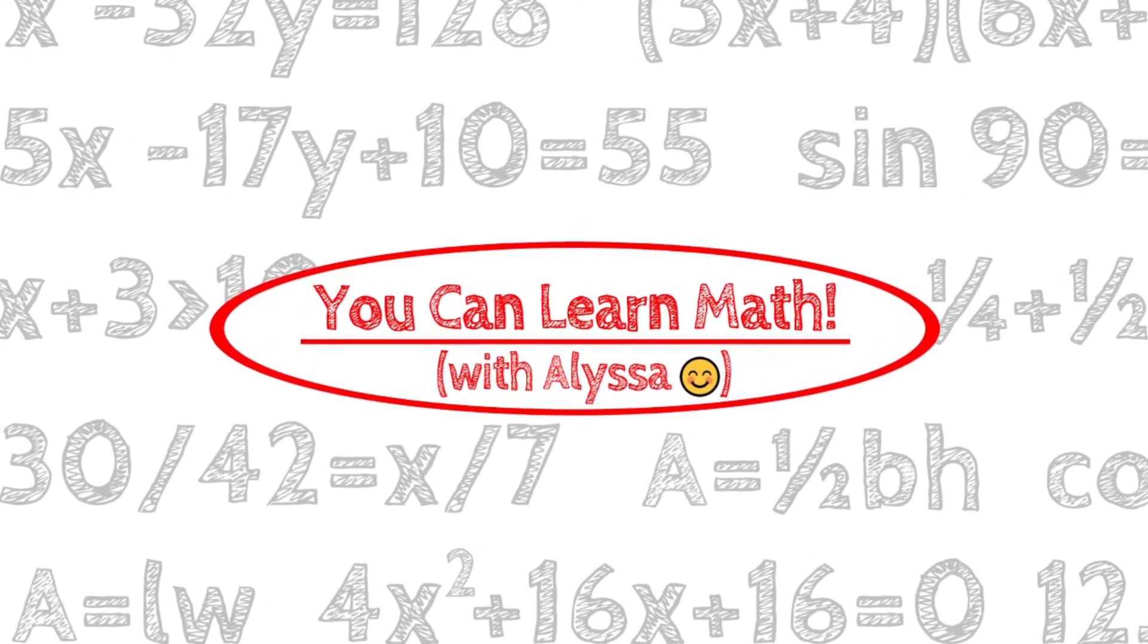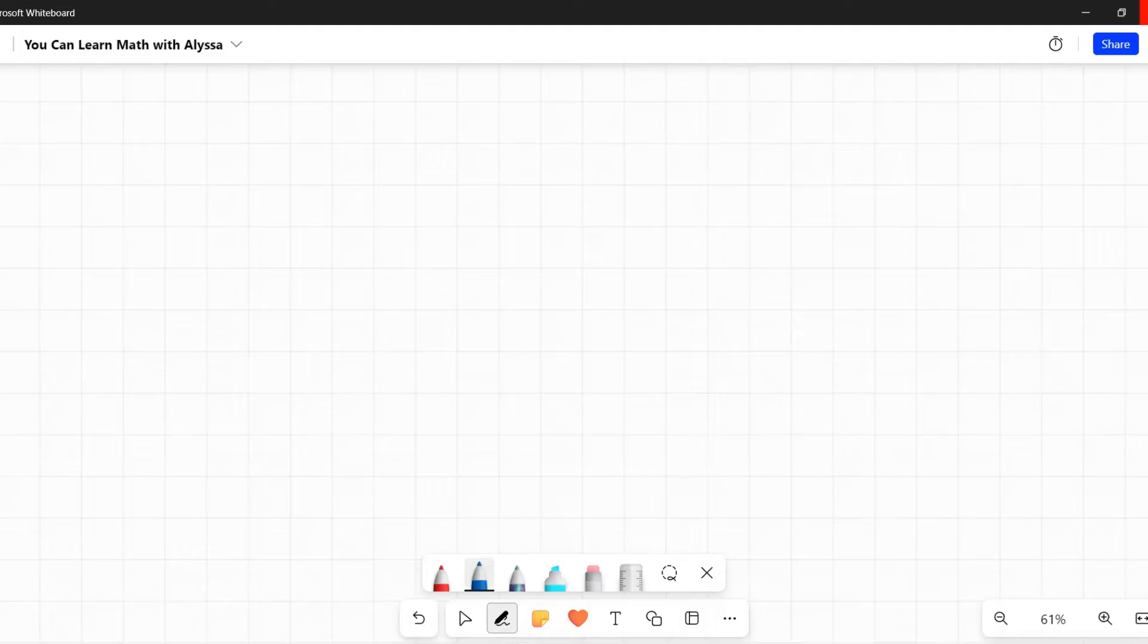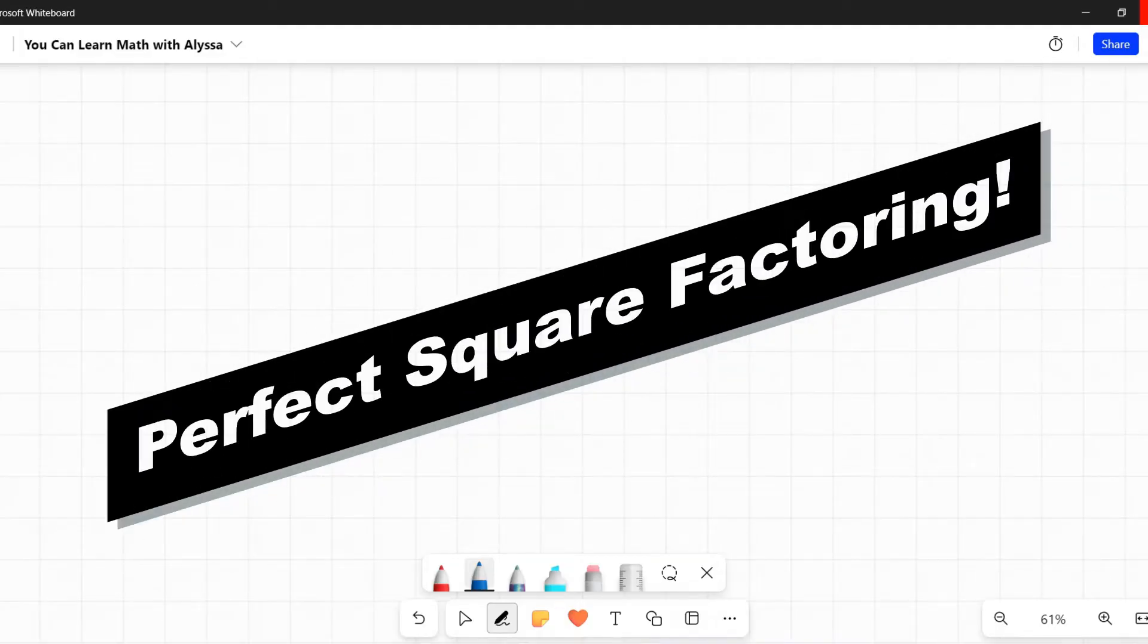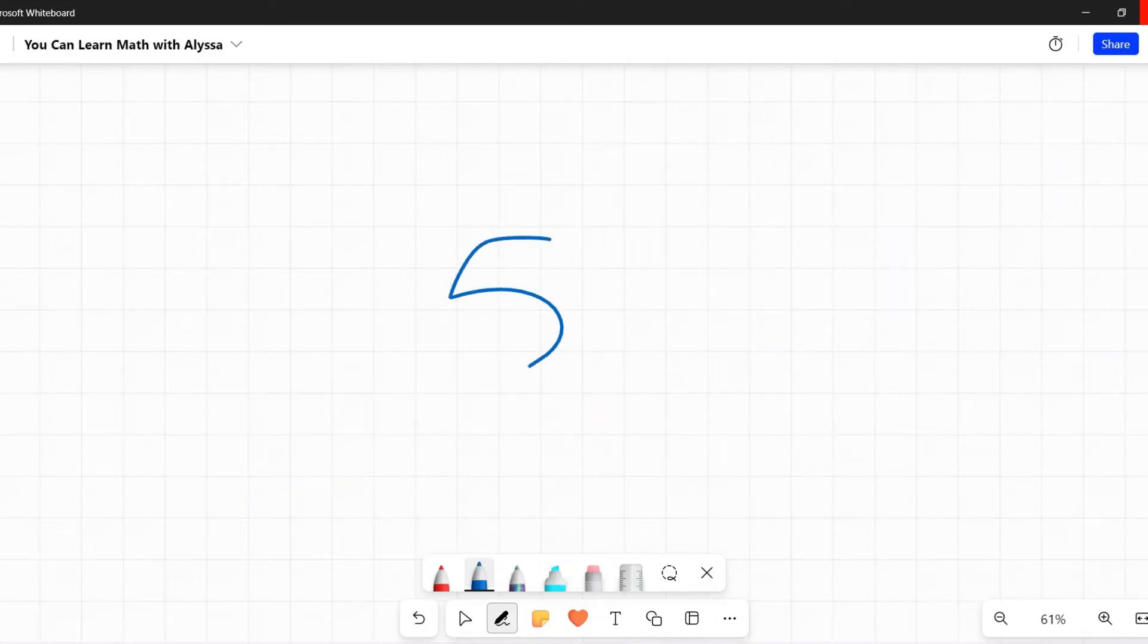Hi everyone, it's Alyssa and welcome to You Can Learn Math. Today we're talking about perfect squares or perfect square factoring. This is not talking about like 5 squared, that would be a perfect square. When we're talking about factoring, it's when we have something like x plus 1 and we square it.